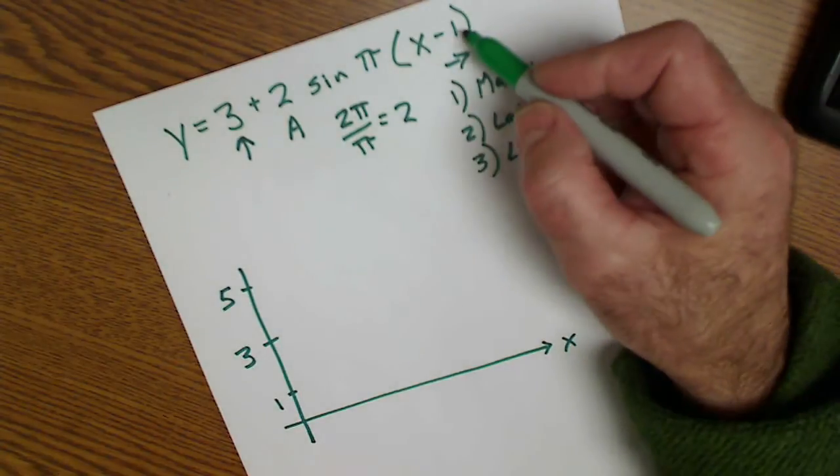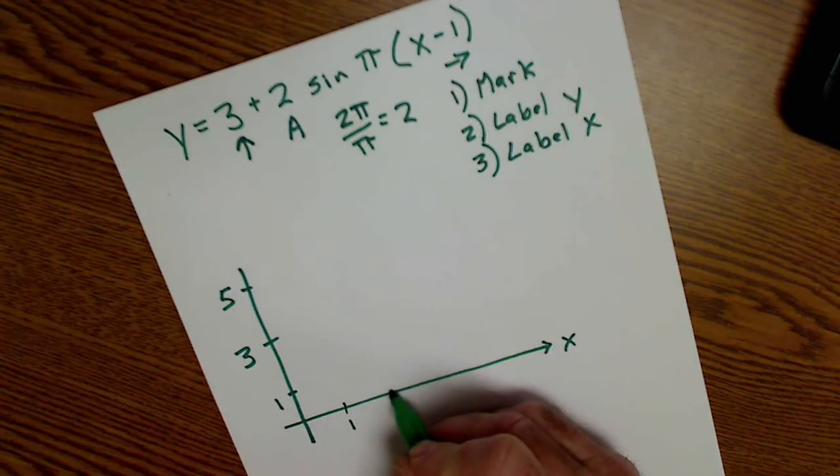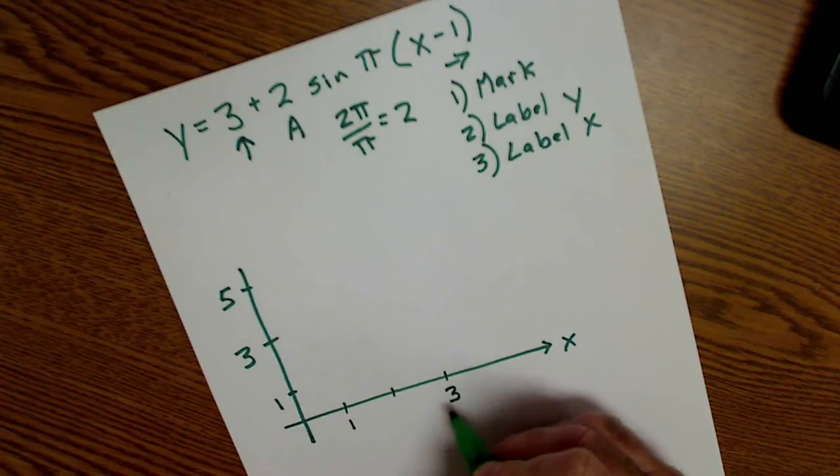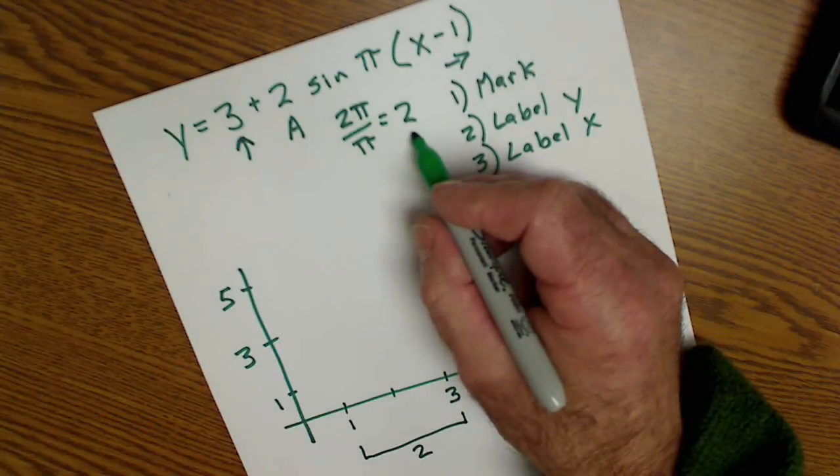These two values affect my x-axis. I start at 1 and I end two units later at 3. So the distance from here to here is my period of 2.